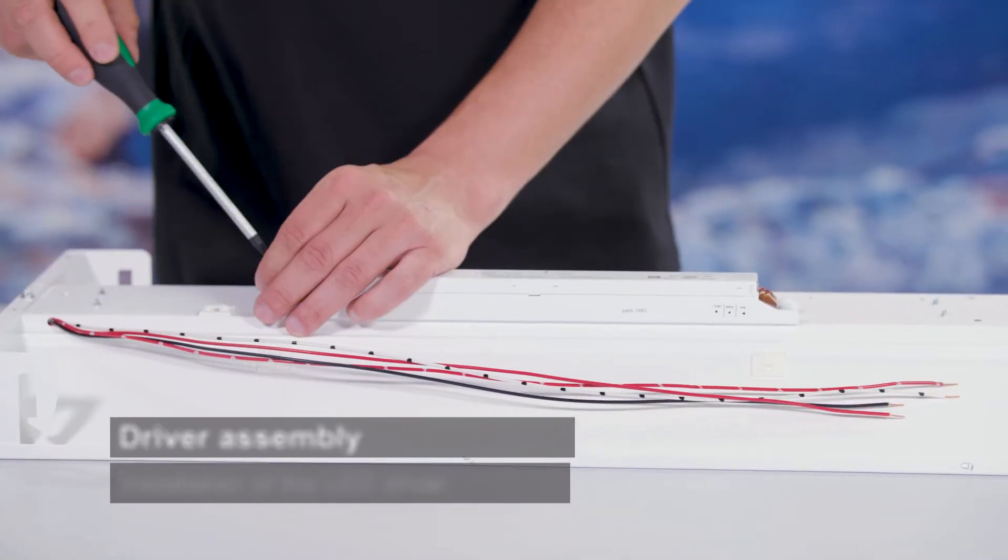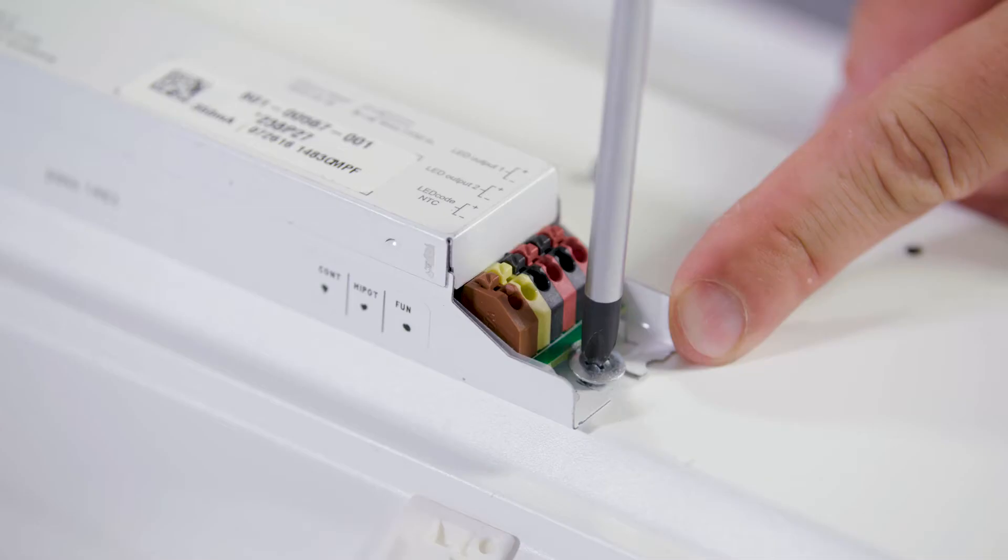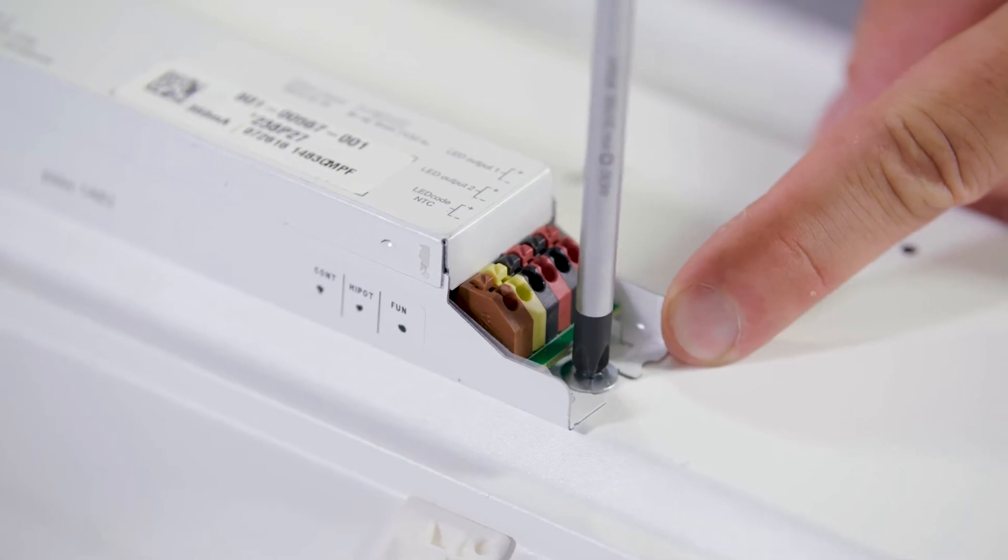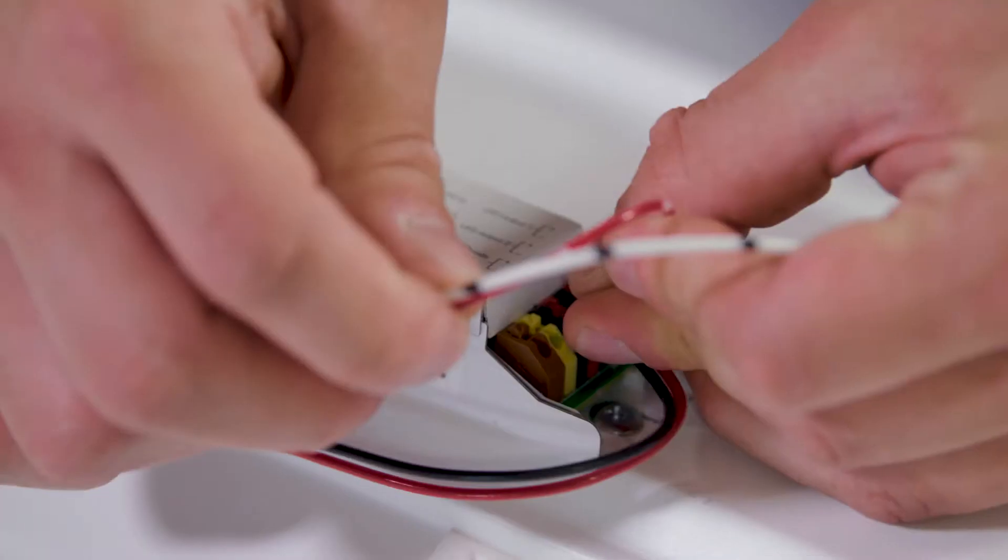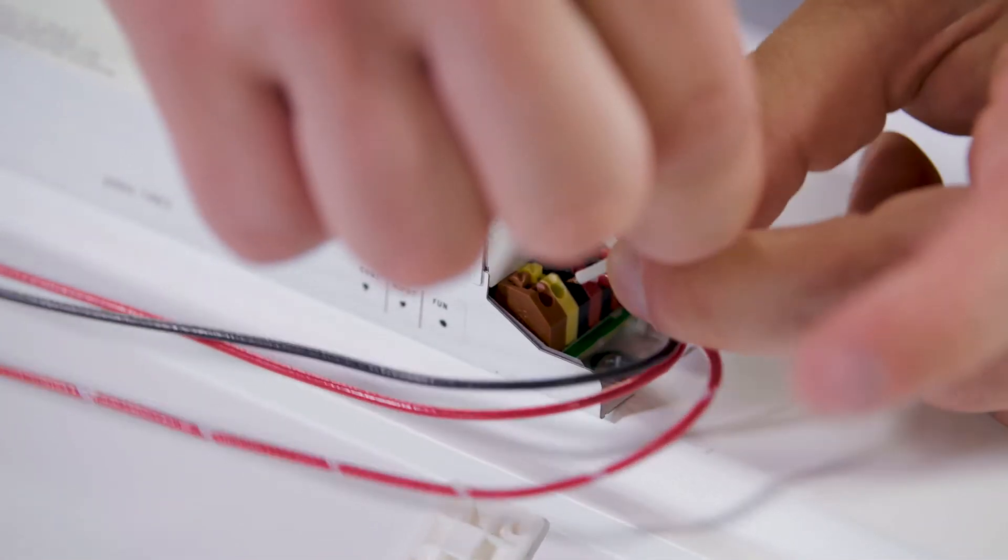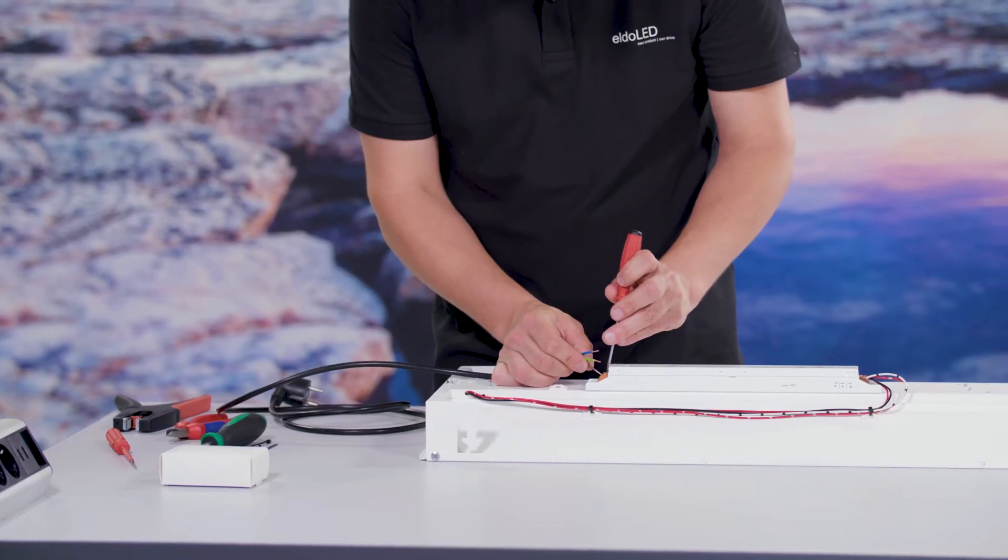Mount the LED driver to the luminaire by using the two screw slots at each end of the driver. Connect the LED wiring which are coming from the LED boards and the power cable, including the earth connection.